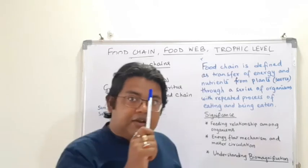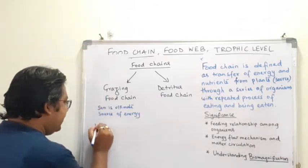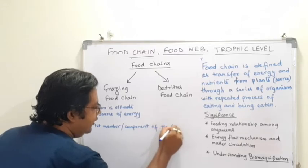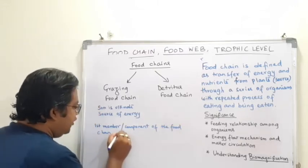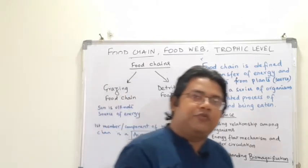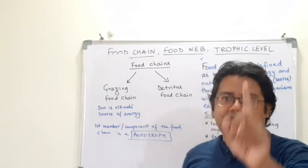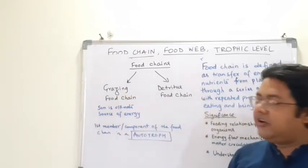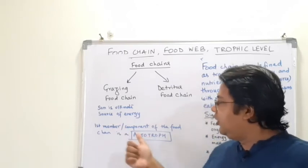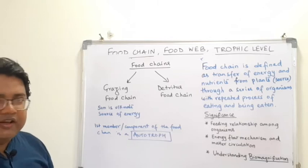For a grazing food chain, the first member or first component of the food chain is always an autotroph, because the sun is the ultimate source of energy. The example we took — grass, grasshopper, frog, snake, hawk — is an example of a grazing food chain. Remember: for a grazing food chain, the sun is the ultimate source of energy and the first member is always an autotroph.